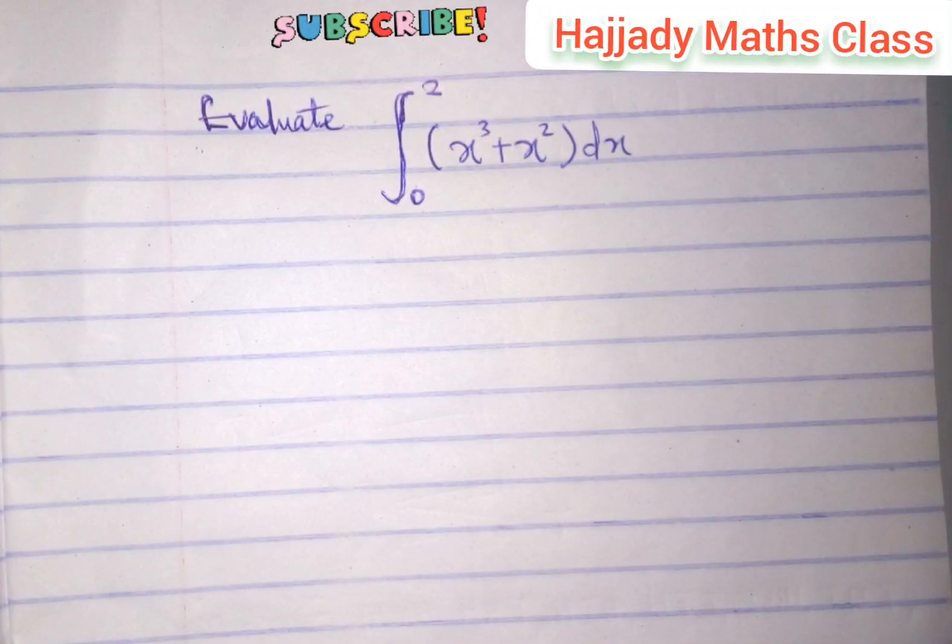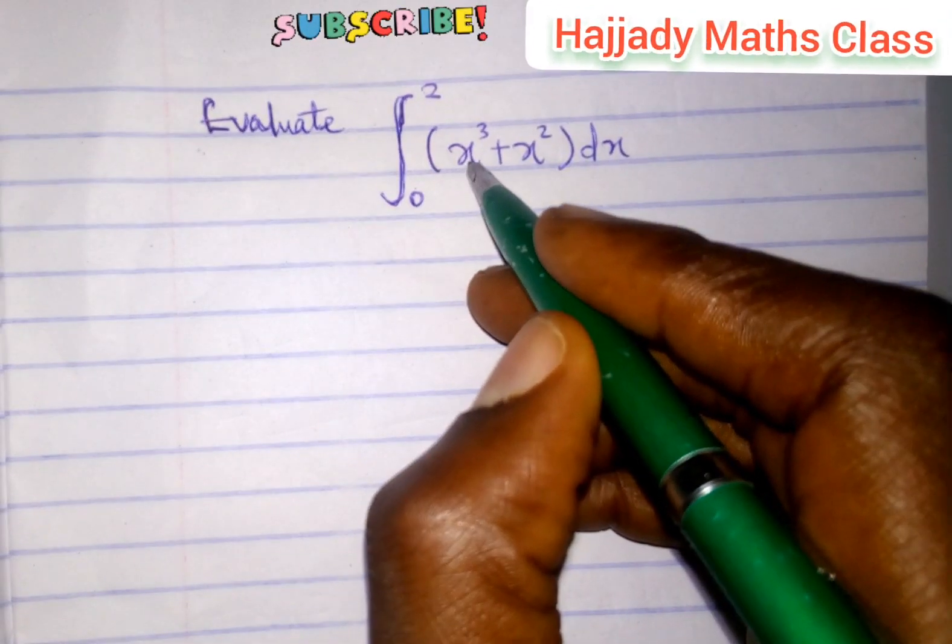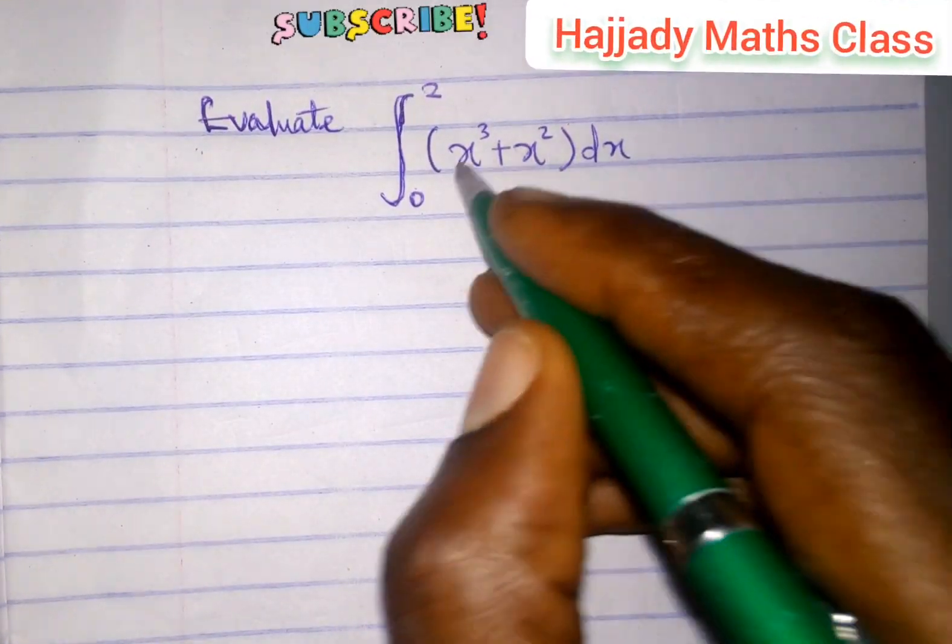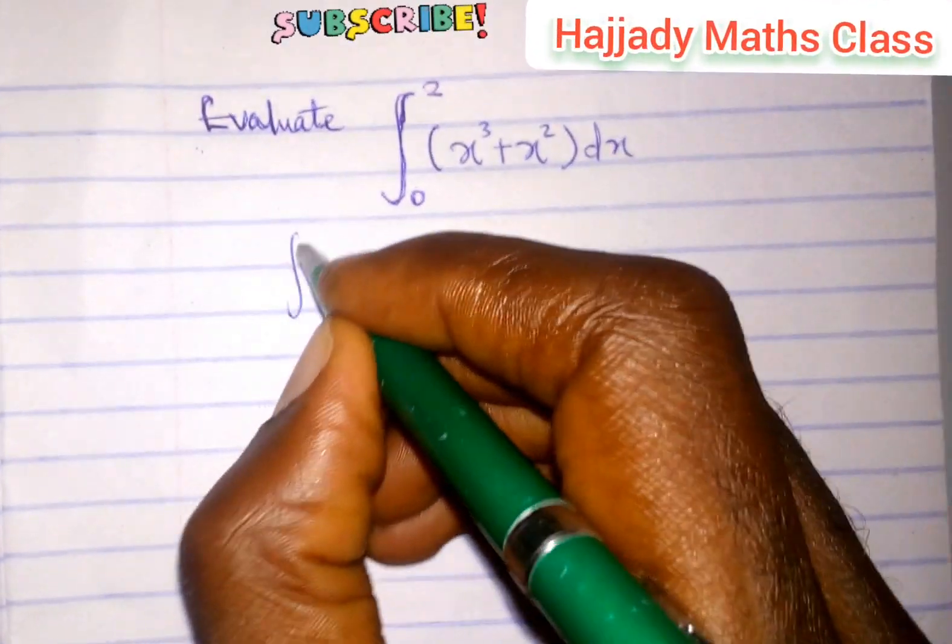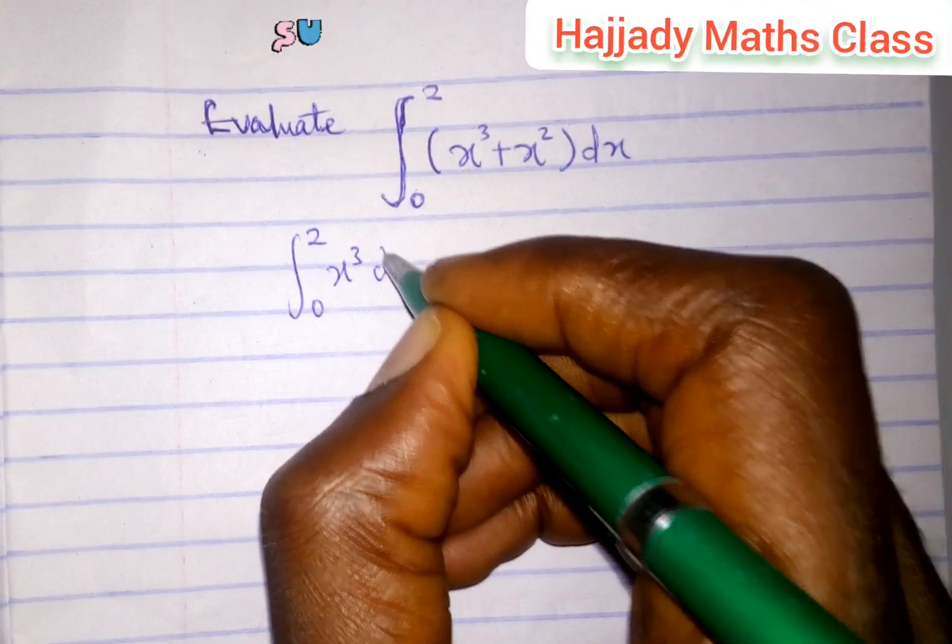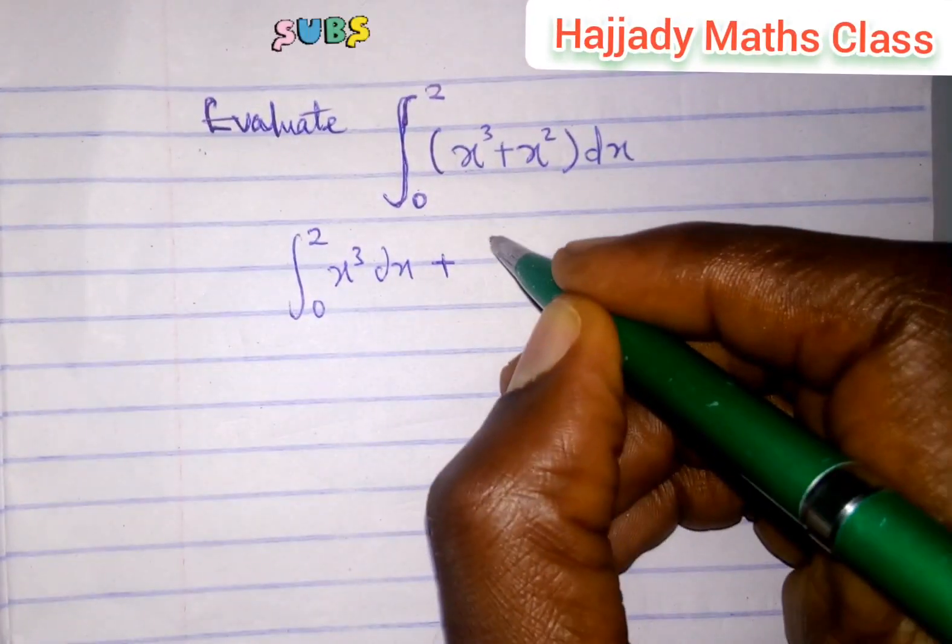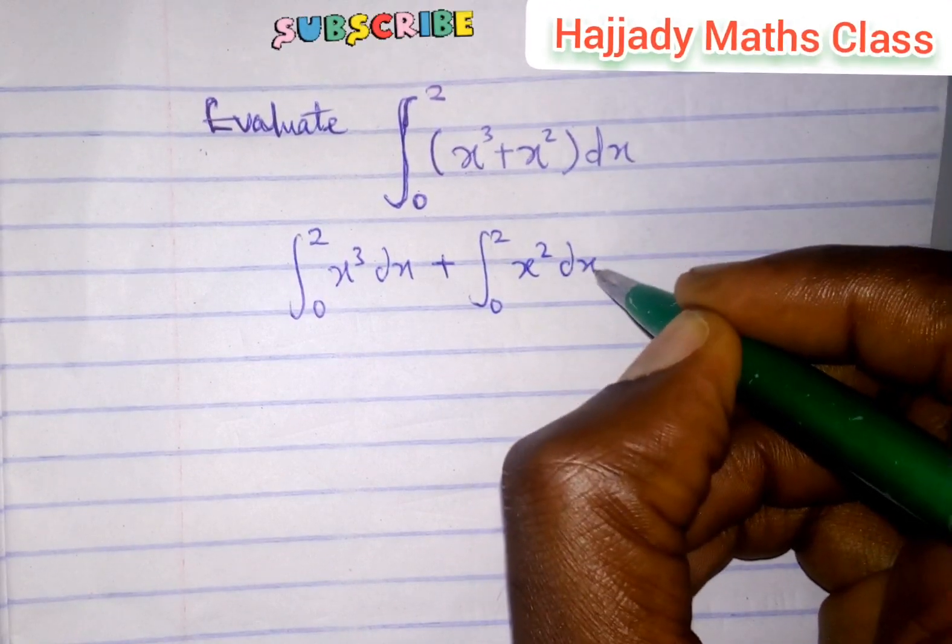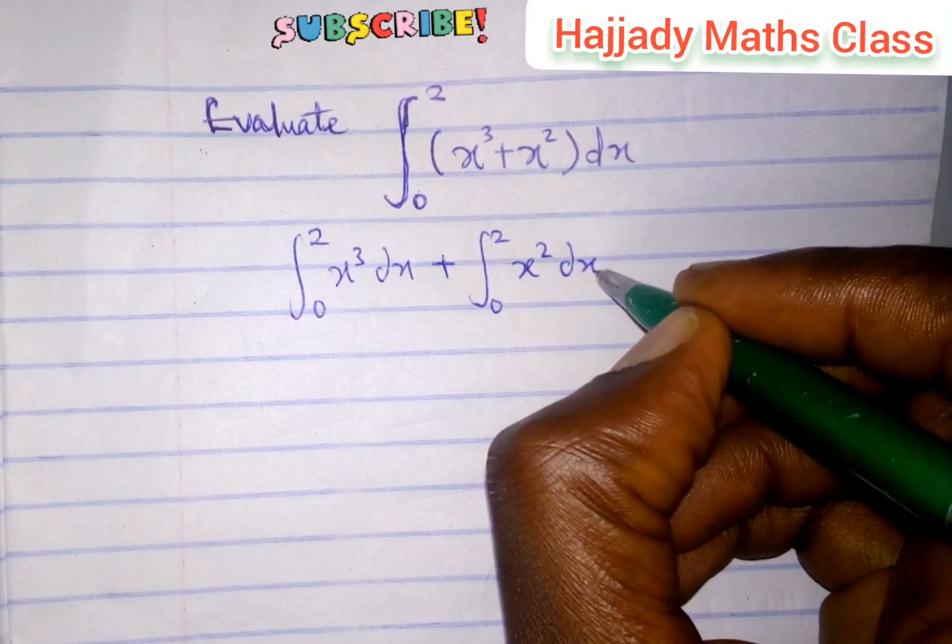Going further with this, we know that the rule for integration is that if you are able to integrate this, you can just split this into the integral from 0 to 2 of x cubed with respect to dx plus the integral from 0 to 2 of x squared with respect to dx.